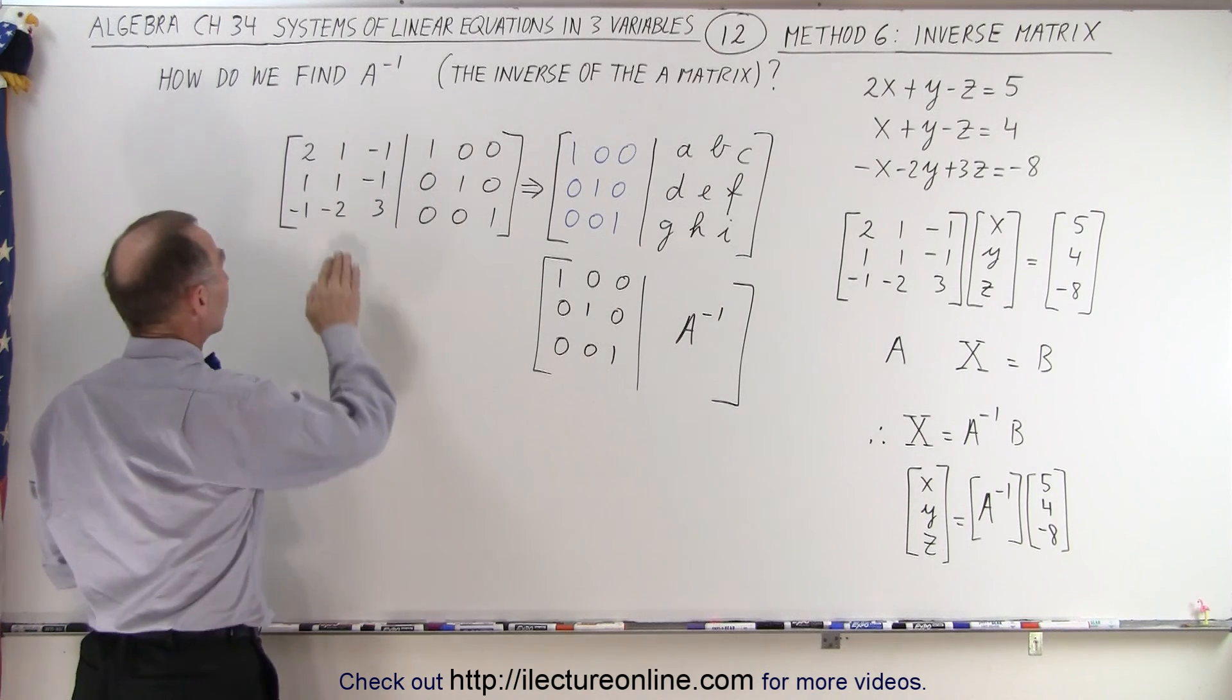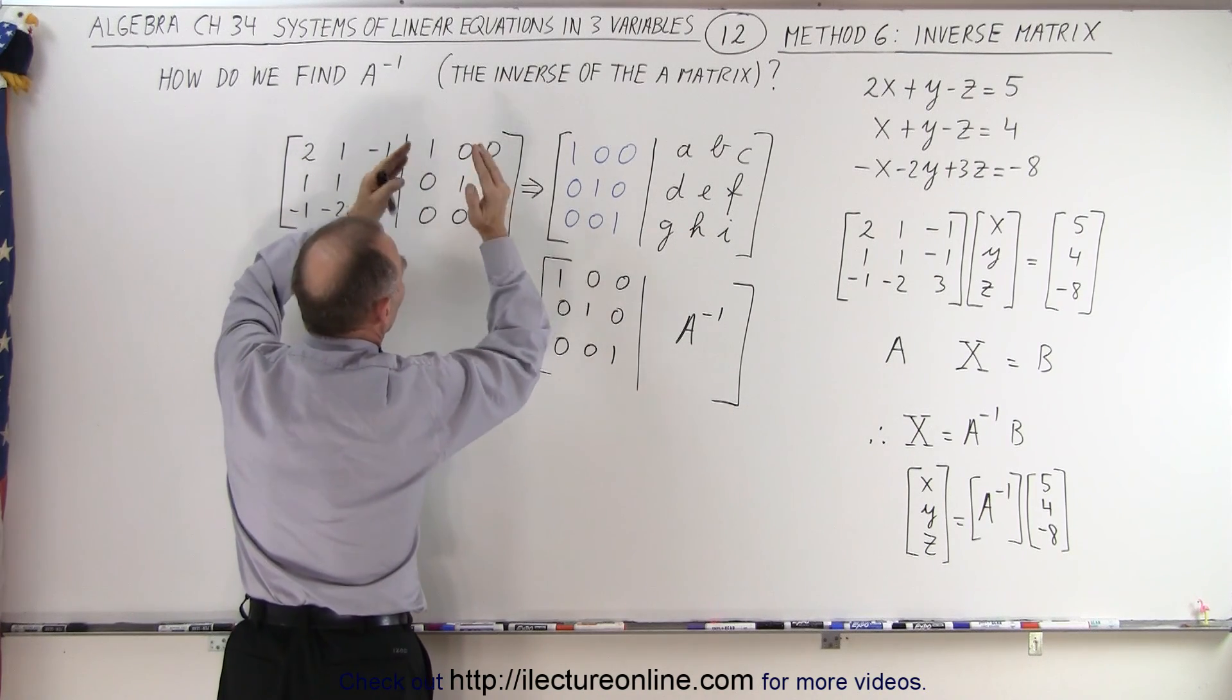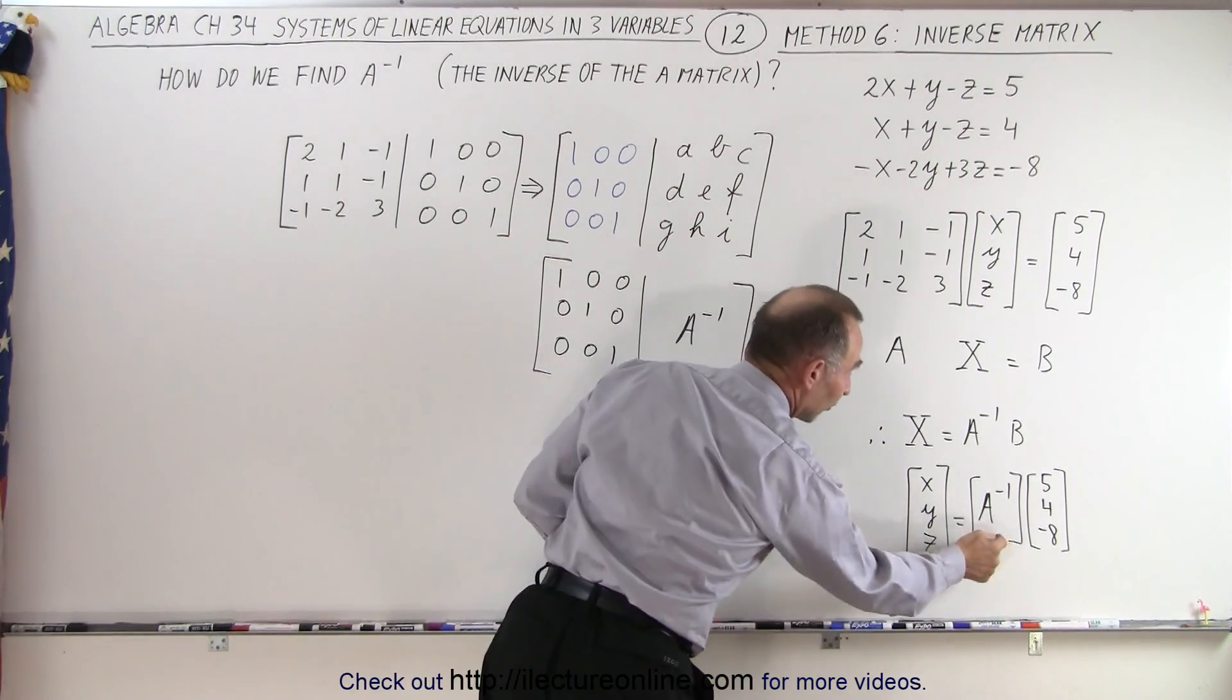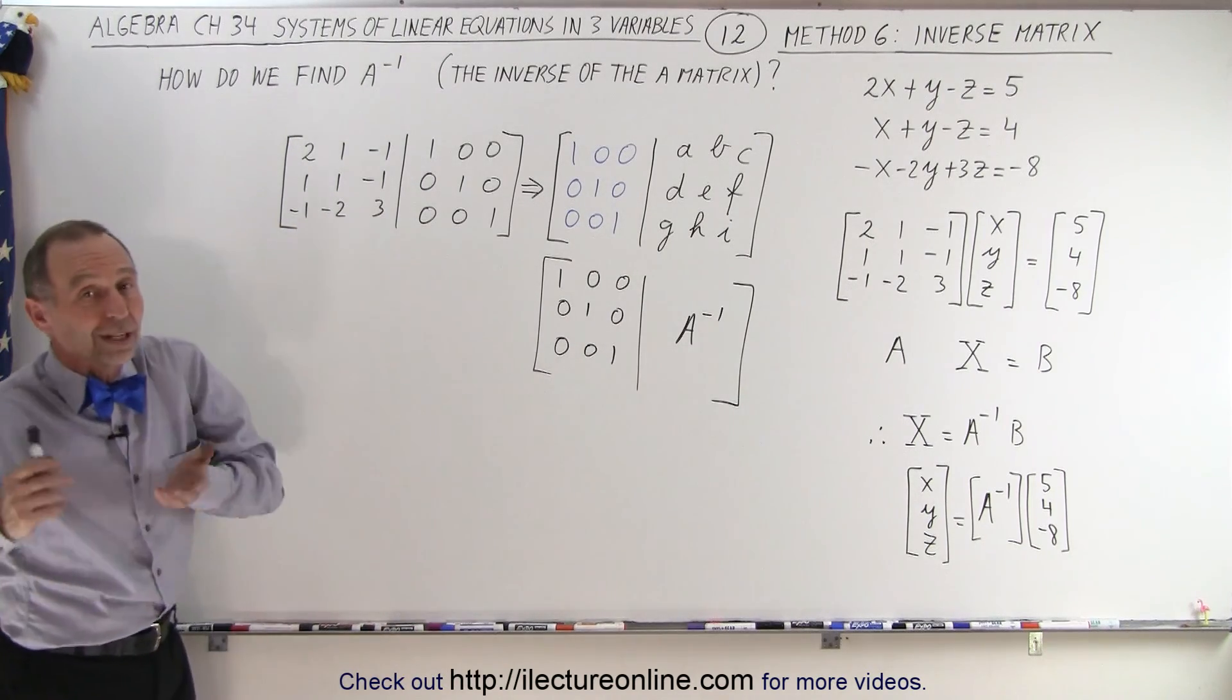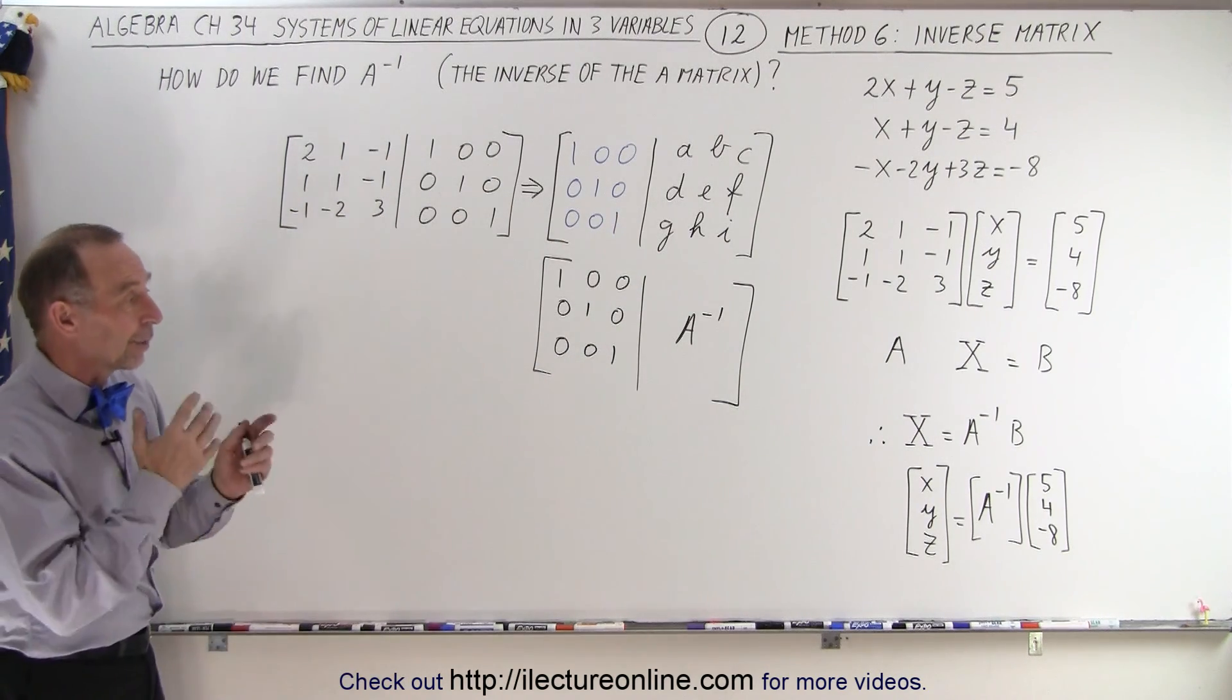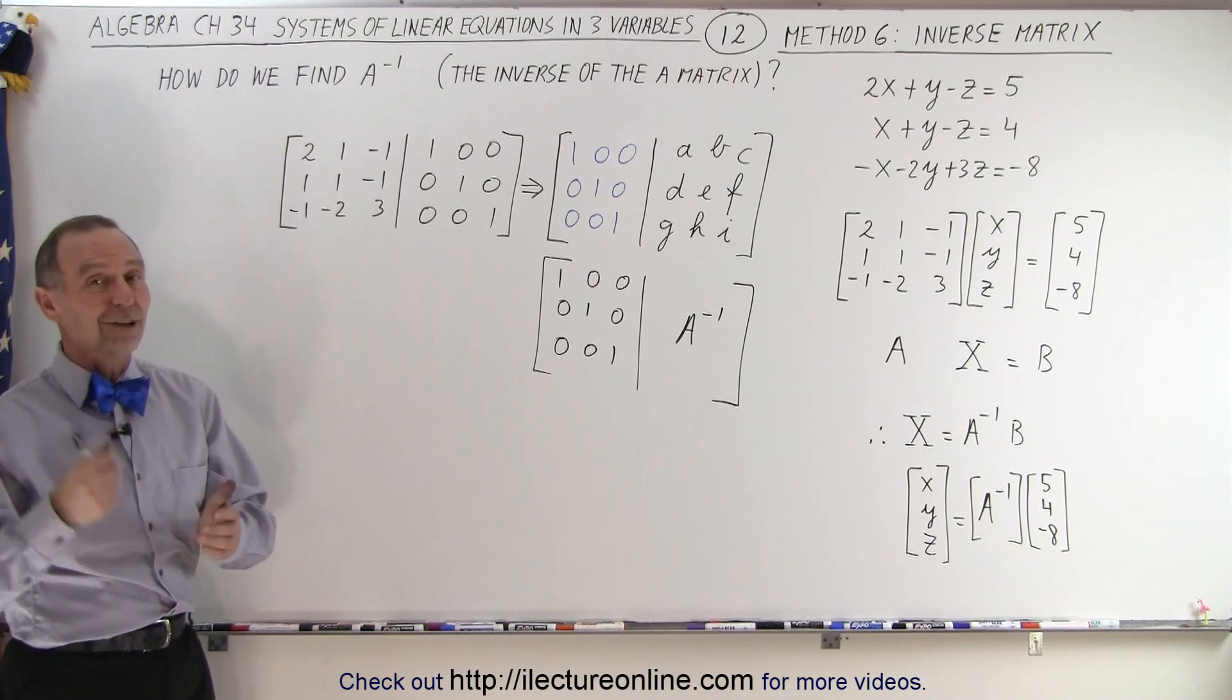So again, we're going to take this and turn it from this form into this form. As we're manipulating these, these numbers are going to change. And this is going to turn into something like that, which represents the inverse matrix. And then we can easily solve for the variables x, y, and z in our system of linear equations. So on the next video, we're going to show you how to go from here to there, so we can solve for the inverse matrix of A, and then we can show you how to find the values for x, y, and z in this particular system of linear equations. And that is how it's done.